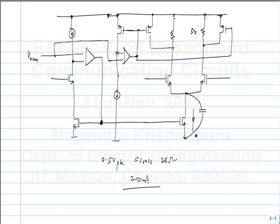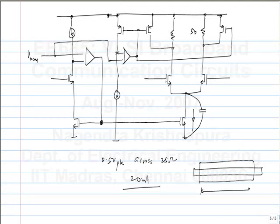When you make large devices, you would not make one transistor with W extremely large. You make a reasonably large width and then connect a number of them in parallel. Also you do not make it very small — not the minimum width of 0.24 micron. The finger width is about 1 or 2 microns and then you use a large number of them in parallel, which gives an optimum trade-off for parasitic capacitances.